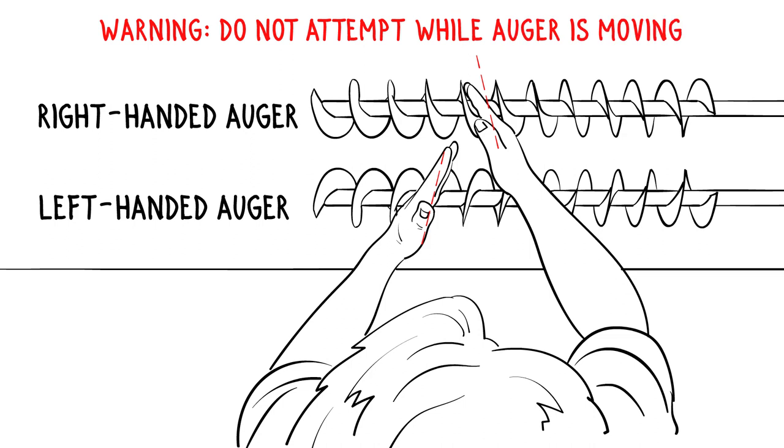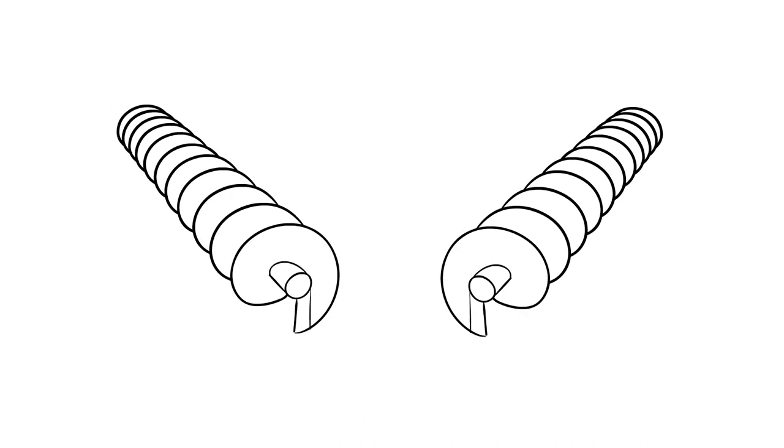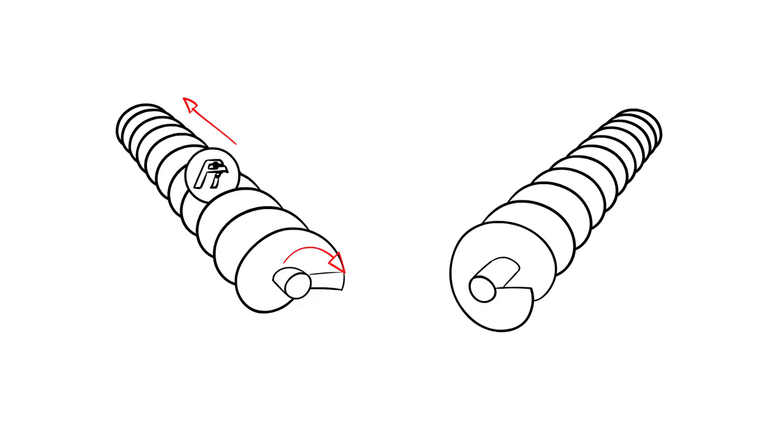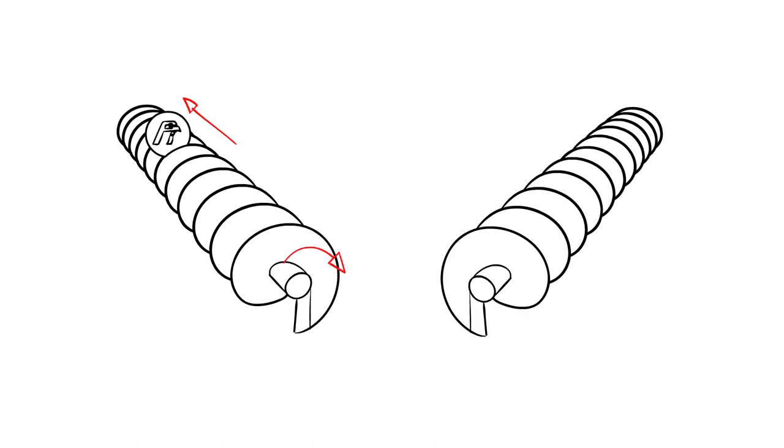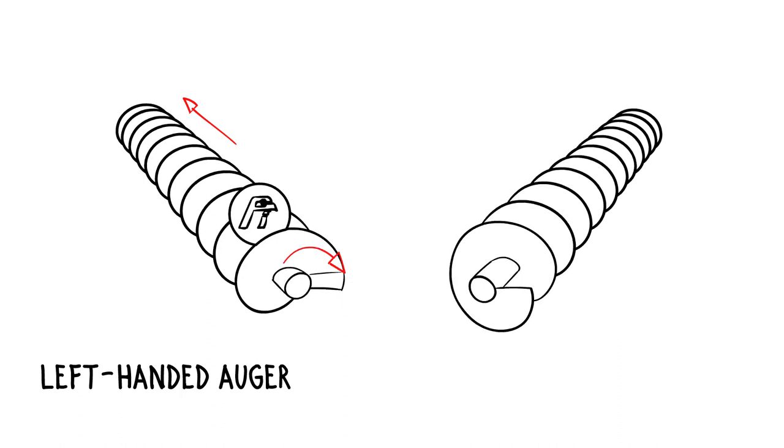As you are using your auger, if the materials are moving away from you and the auger is rotating clockwise, it is a left-handed auger.